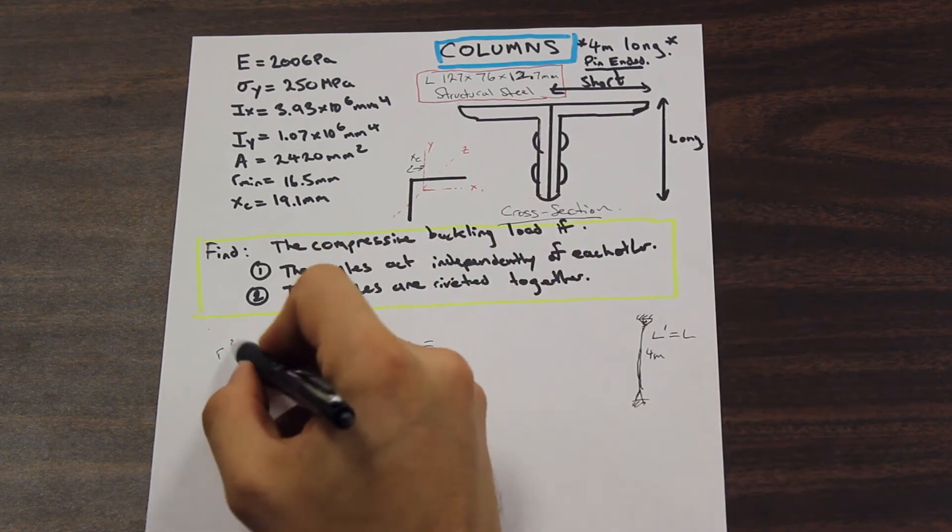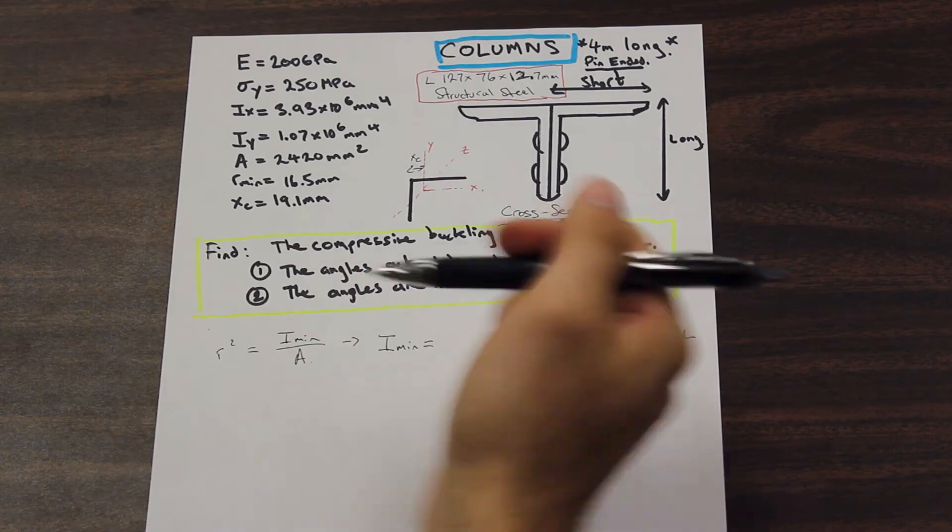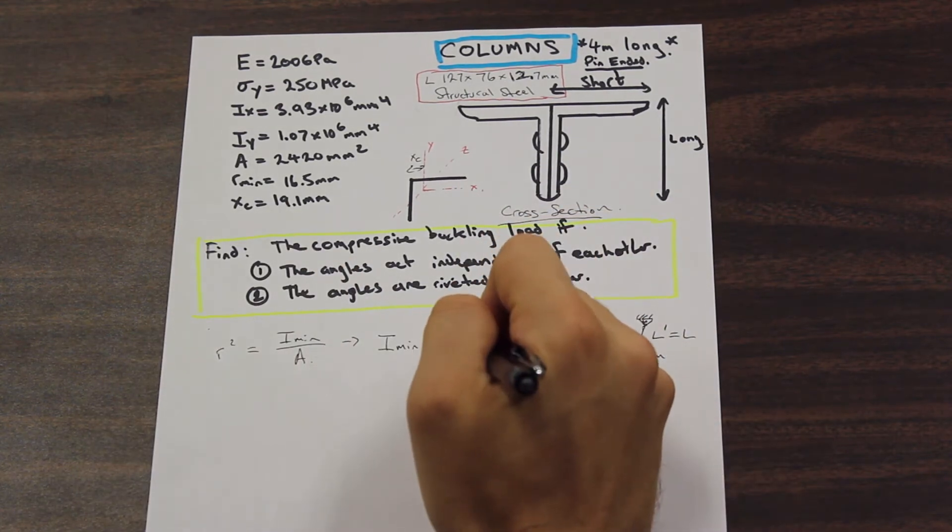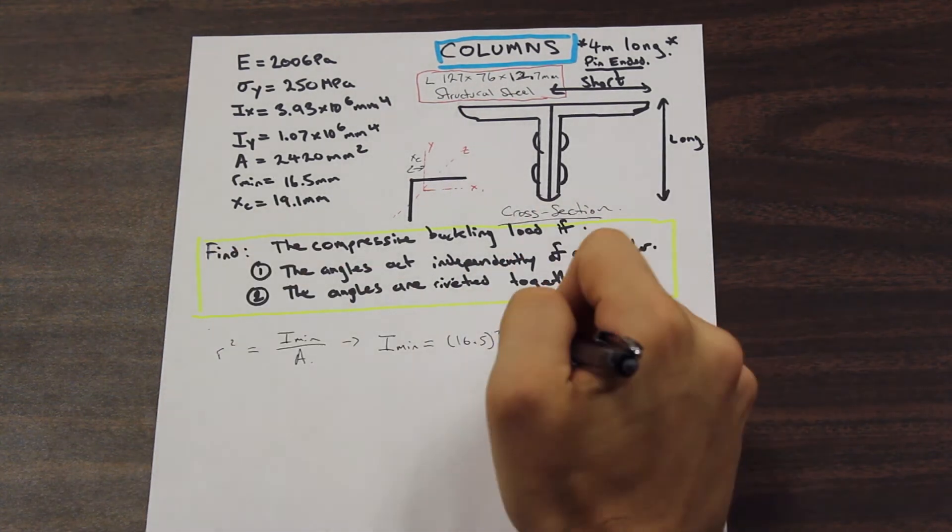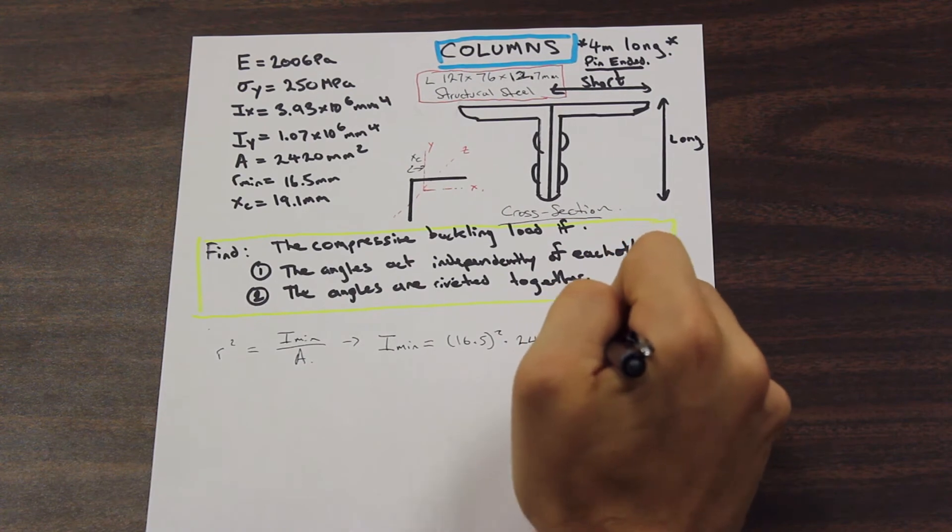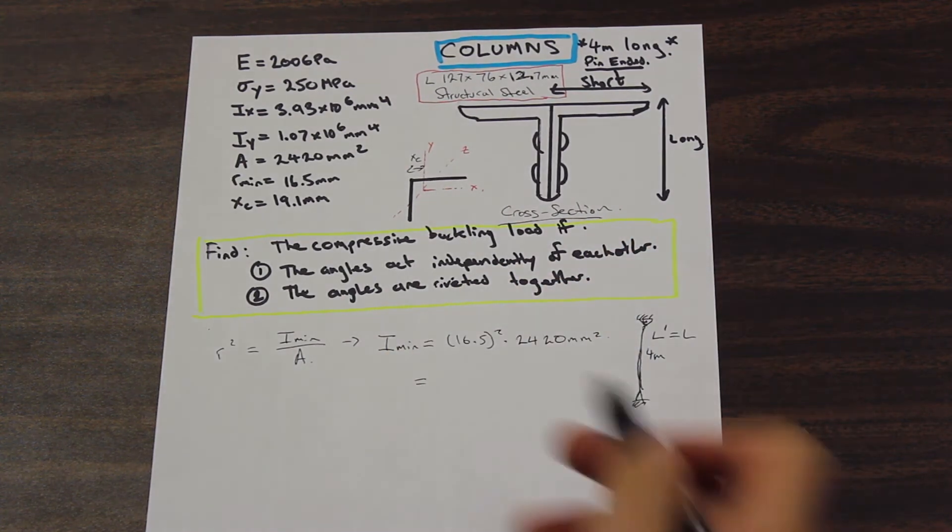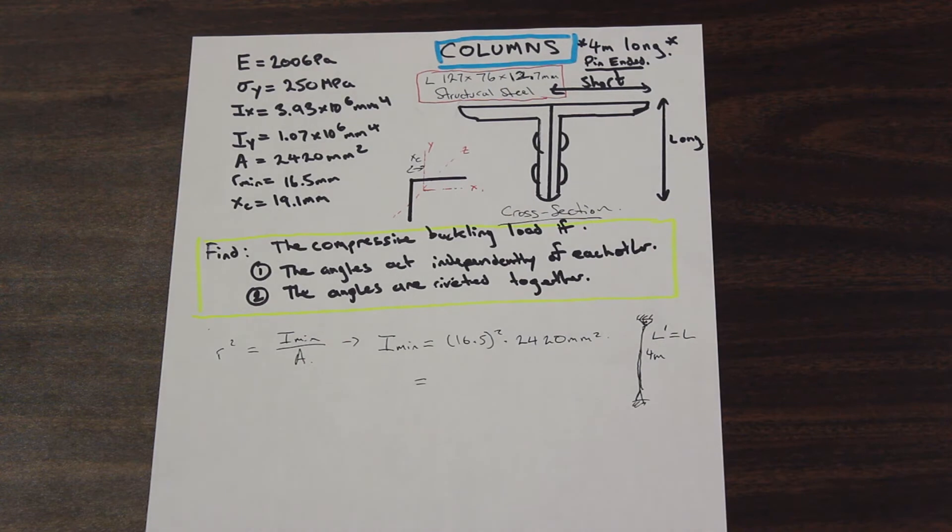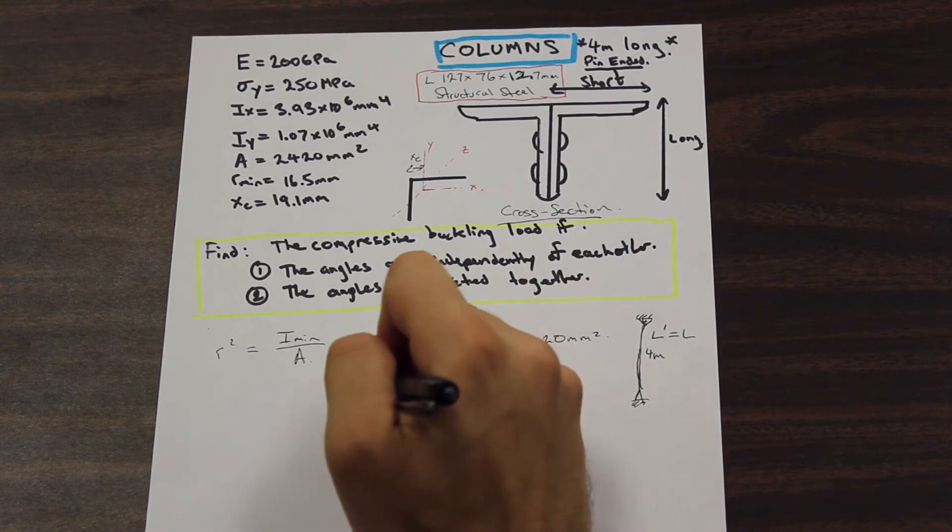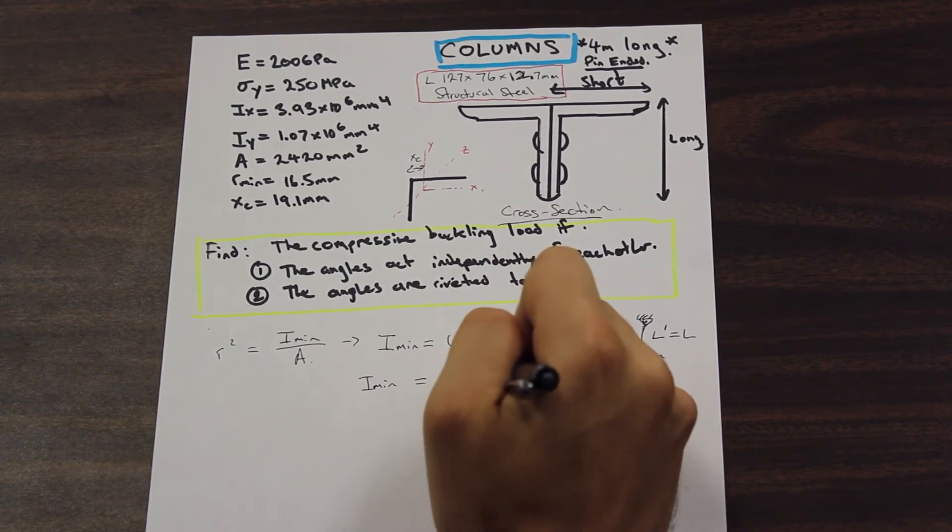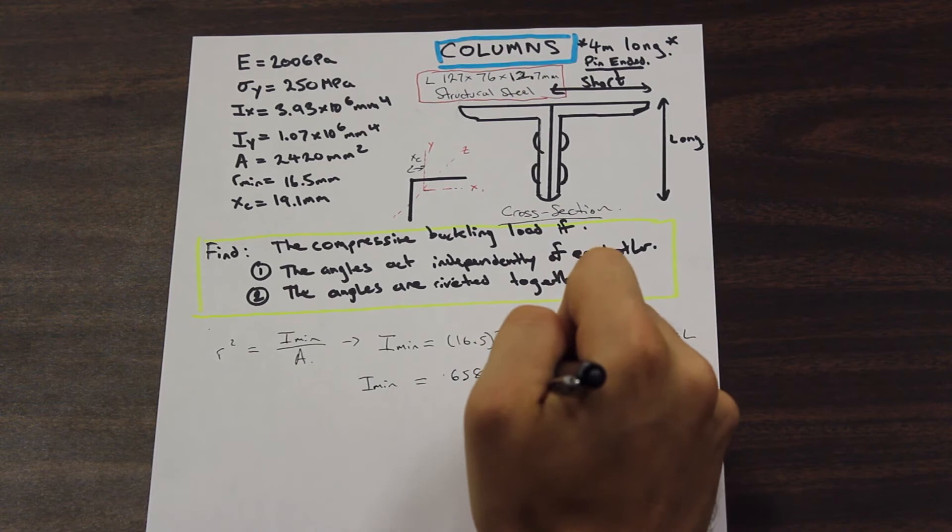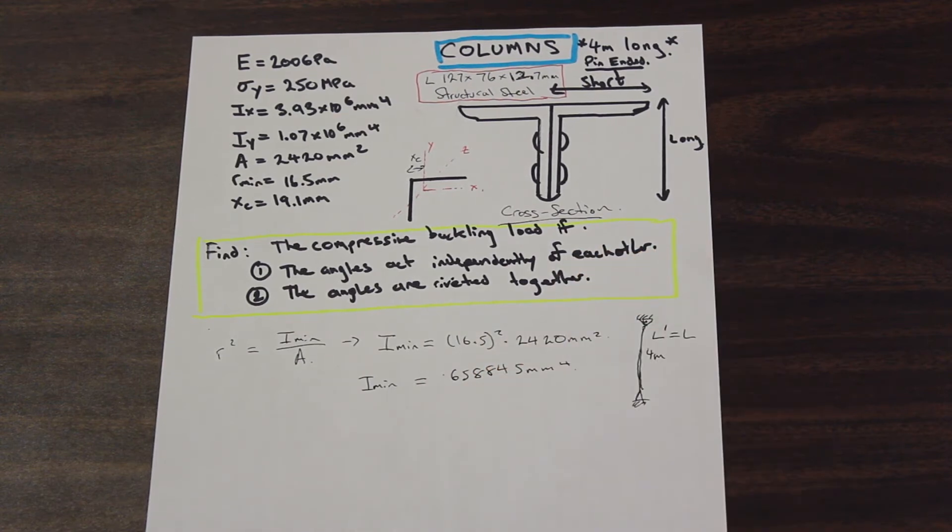Okay, so the square of the radius of gyration is equal to the minimum moment of inertia divided by the area. So we can rearrange that, and we can solve for the moment of inertia, the minimum that we need to solve the problem. So what's our r value? Well, our r value is given in the table, and that's going to be 16.5. That's squared, and we're also given the area, which is 2,420 millimeters squared. And if we just throw that into our calculator, we're going to get a moment of inertia of... We get 658,845 millimeters to the fourth.